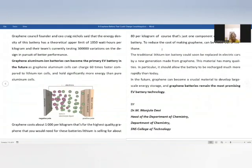Graphene council founder and CEO said that the energy density of this battery has a theoretical upper limit of 1,050 watt hours per kilogram, and their teams are currently testing thousands of variations on the design in pursuit of better performance.